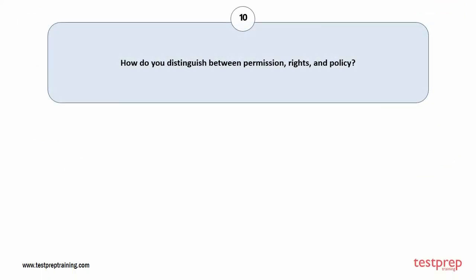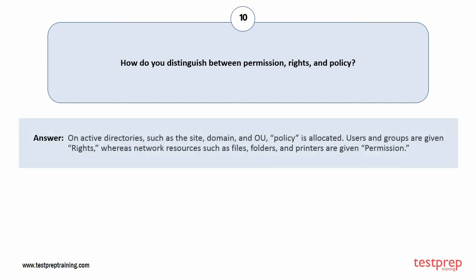Question number 10: How do you distinguish between permission, rights, and policy? On Active Directories, such as the site, domain, and OU, policy is allocated. Users and groups are given rights, whereas network resources such as files, folders, and printers are given permission.